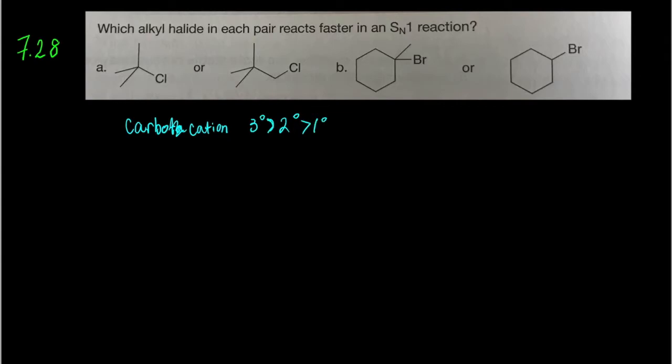You have some special ones like allylic and benzylic, but it doesn't seem to be part of this problem. You need to identify the halogen, locate what's called the alpha carbon, and then count how many carbons are attached to that carbon.